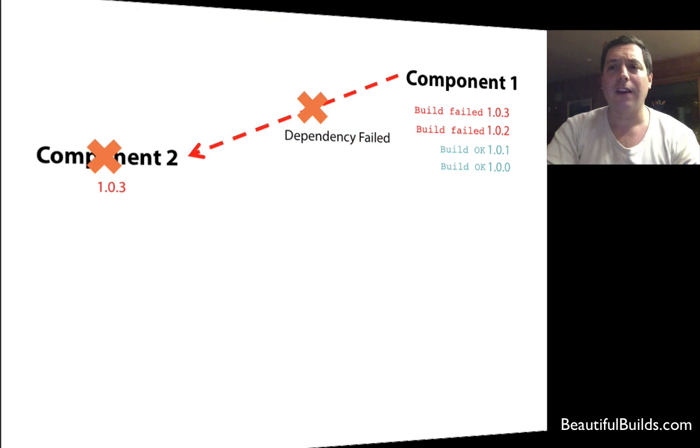In this case, component one, if we had a snapshot dependency on it, our build of component two would actually fail. Because component one fails our build, and the CI server, in this case, TeamCity, recognizes that a snapshot dependency has failed to build. And then component two will actually stop from building.